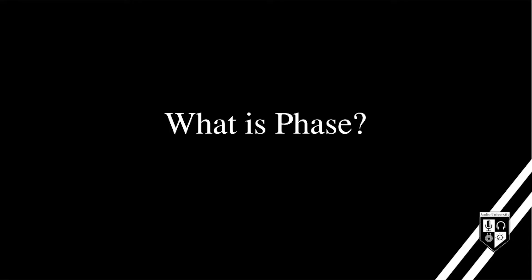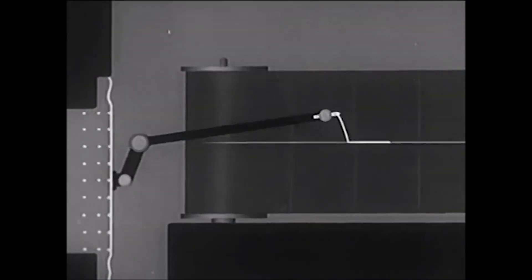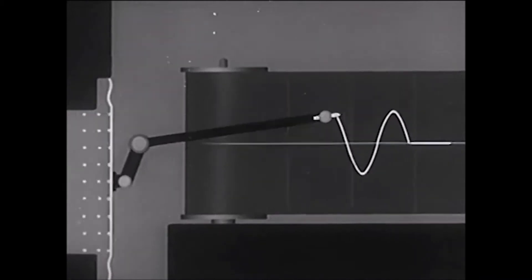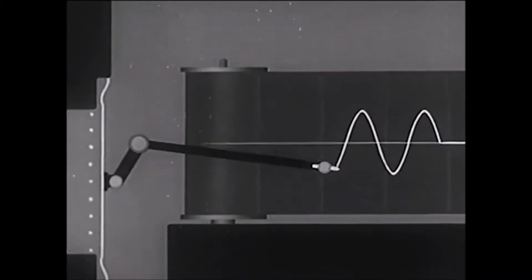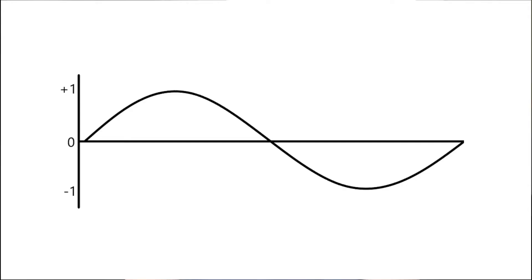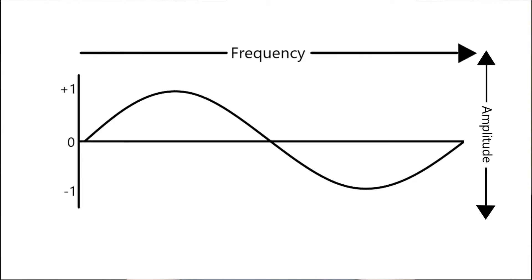So what is phase? A sound wave is a series of high pressure and low pressure phases. This is a sound wave on a graph. When the line goes up, the pressure increases. When the line goes down, the pressure decreases. The intensity of the pressure is the amplitude. The number of high and low pressure phases per second is the frequency.